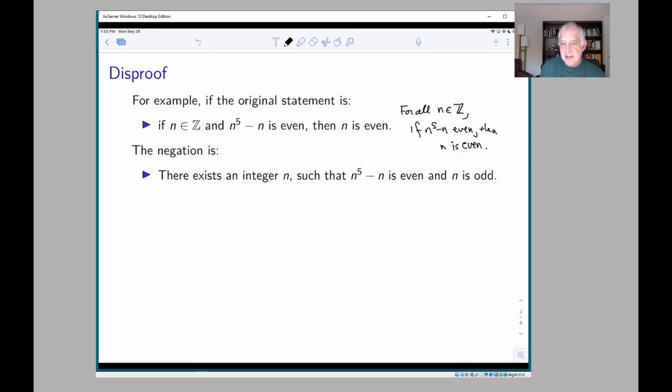The negation of that statement is there exists n in Z, and now we have to negate this conditional statement. Remember the best way to negate not P implies Q is P and not Q.